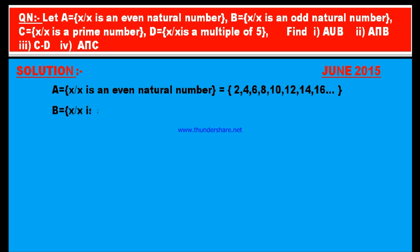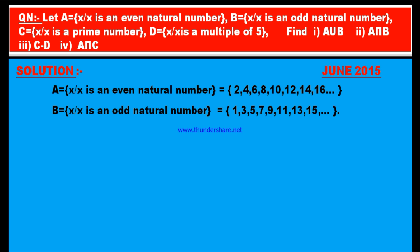B = {x | x is an odd natural number}. Odd natural numbers start from 1: 1, 3, 5, 7, 9, 11, 13, and so on. C = {x | x is a prime number}. Prime numbers start from 2: 2, 3, 5, 7, 11, 13, 17, and so on.